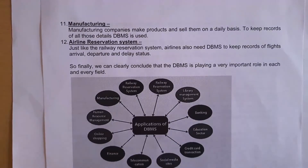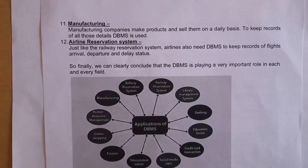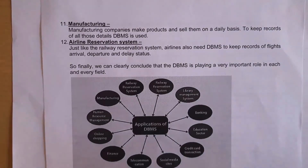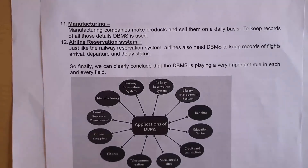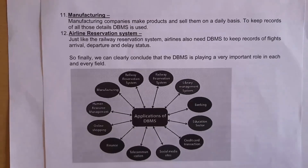The next application is the airline reservation system, which is similar to the railway reservation system. It contains information regarding passengers — like the passenger's name and the time they purchased their ticket. It also contains information regarding flights — like arrival time, departure time, and any flight delay status. All this information is stored in the airline database, so we also use database management system software in airlines.